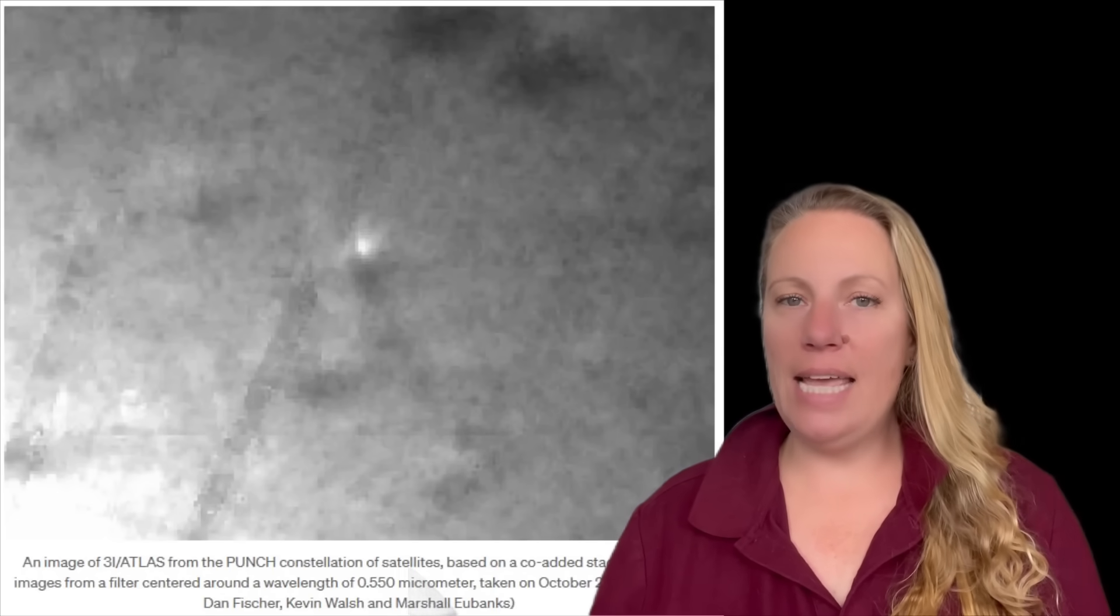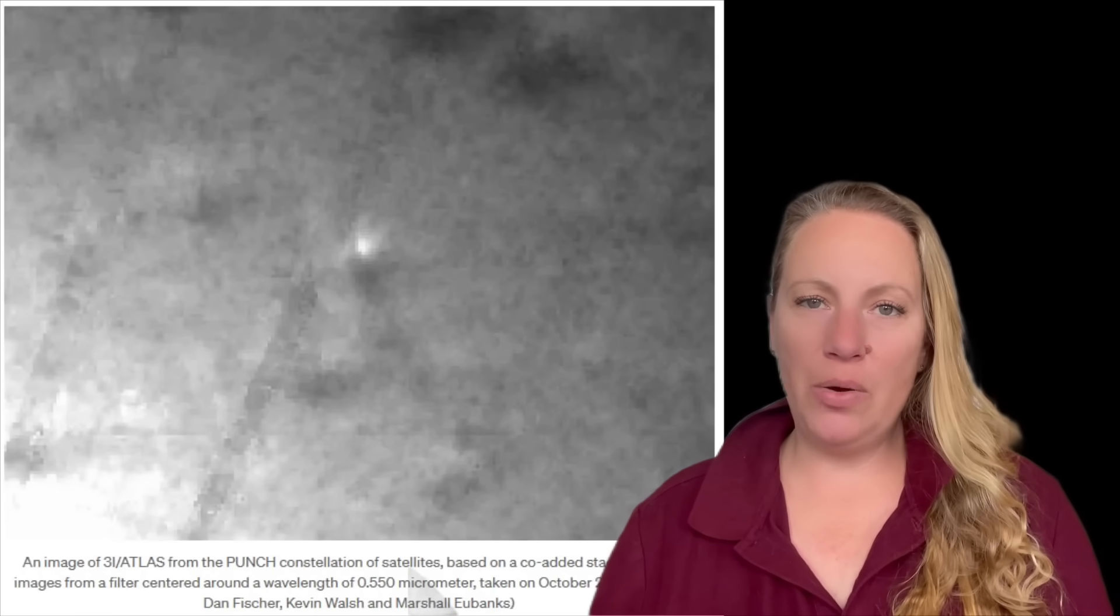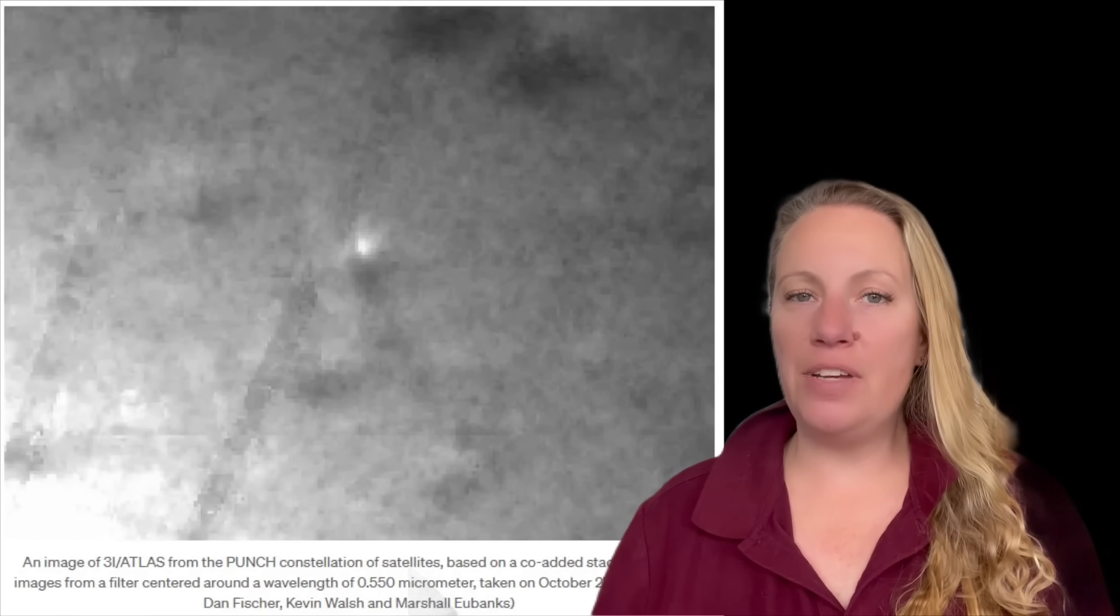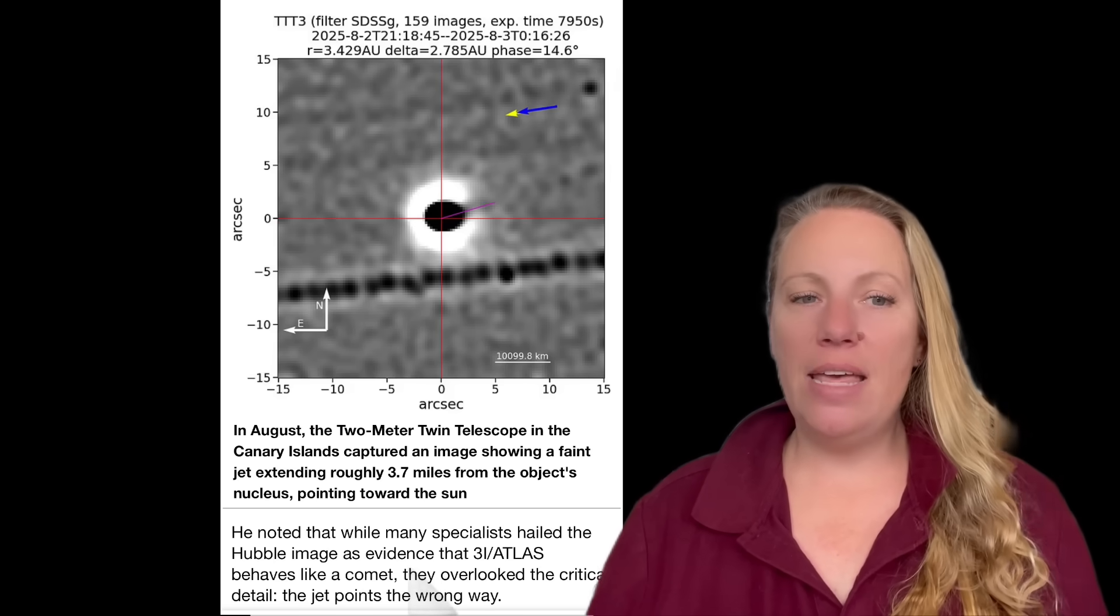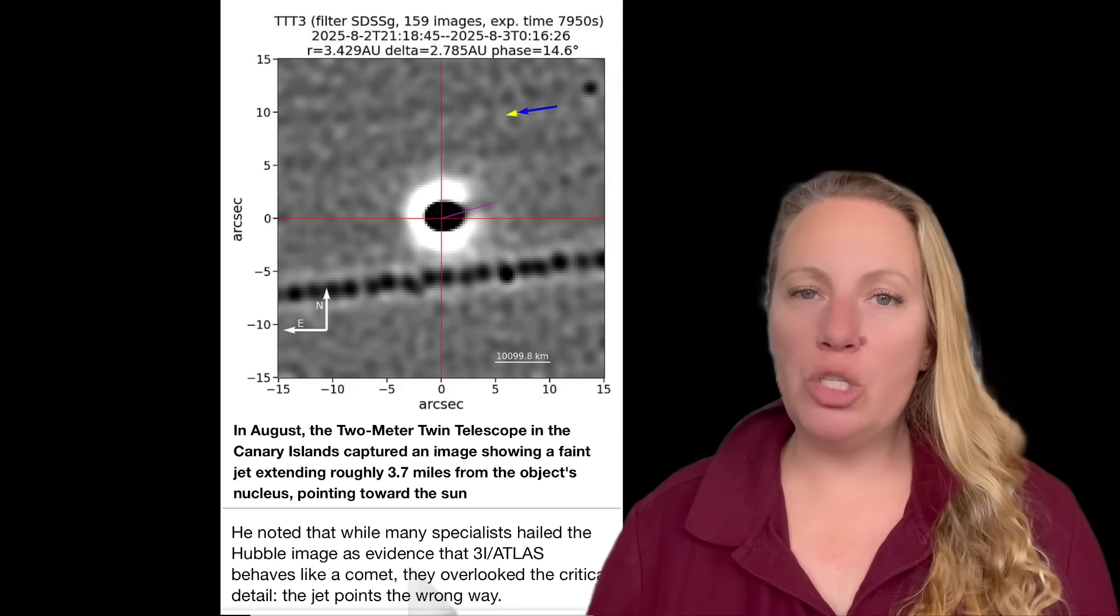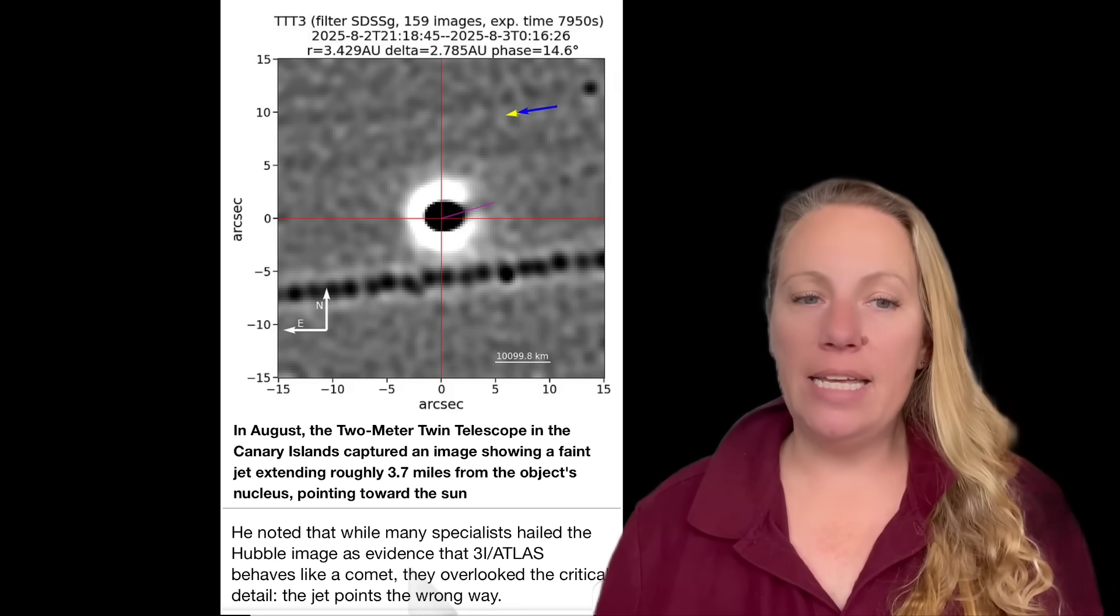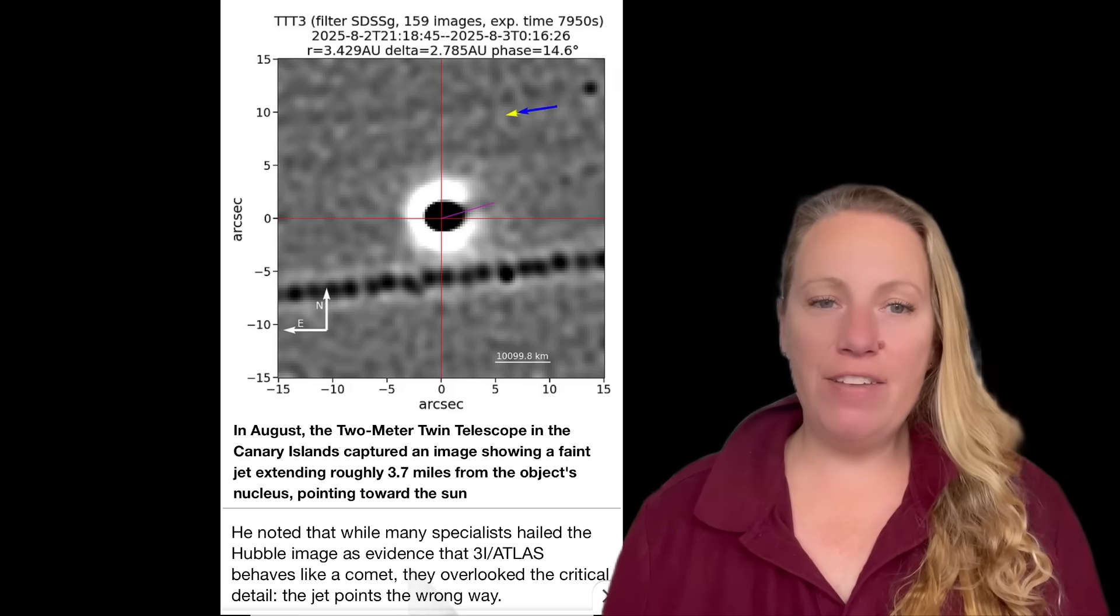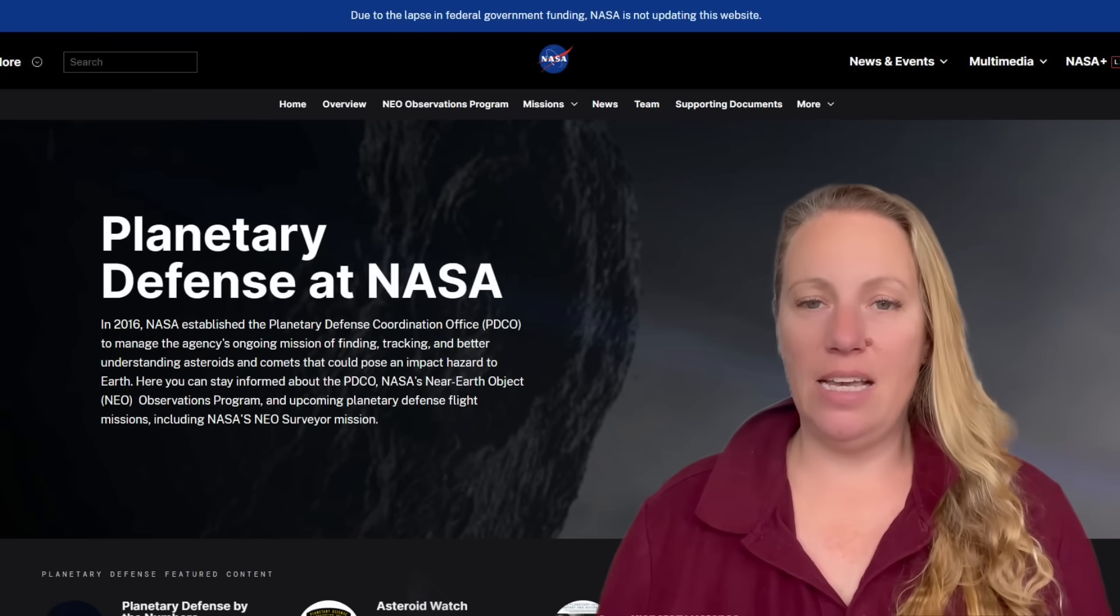And make no mistake, this is not just another comet. We're looking at this interstellar object, a piece of an alien star system that has never before entered our space, at least not since we started noticing these things. And it's behaving in ways that leave scientists scratching their heads.